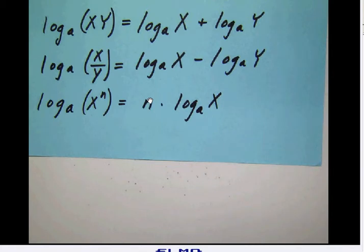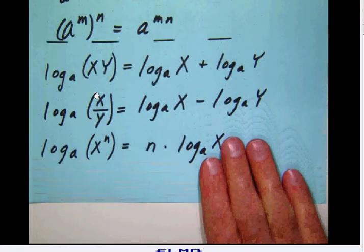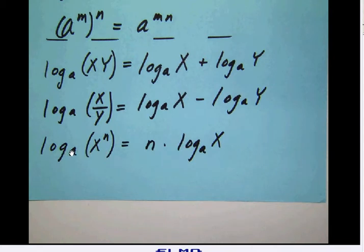This last rule is basically the power-to-a-power rule: log to the base a of x to the n power. The log to the base a of x is an exponent, and n is already an exponent, so when you raise a power to a power you multiply the exponents. In practical use, this is very important because it allows us to grab the exponent and pull it down in front. This rule has tremendous applications as we will see in the problems.